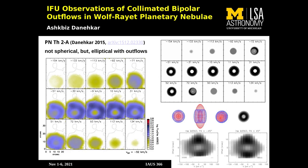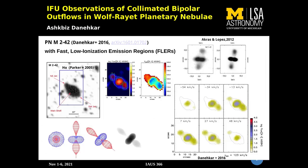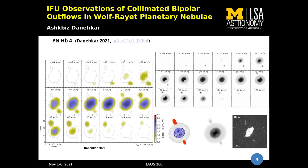I constrained the 3D morphology of this planetary envelope using the program SHAPE, which can be used to produce position-velocity diagrams and velocity channel maps. Using these PV diagrams and velocity channel maps extracted from IFU observations, together with archival high-resolution HST image observations, I constrained kinematic models of this planetary nebula.